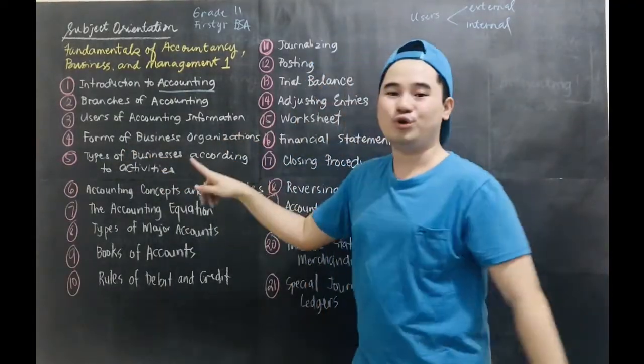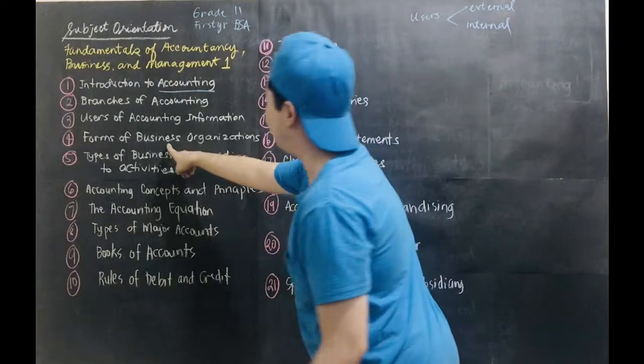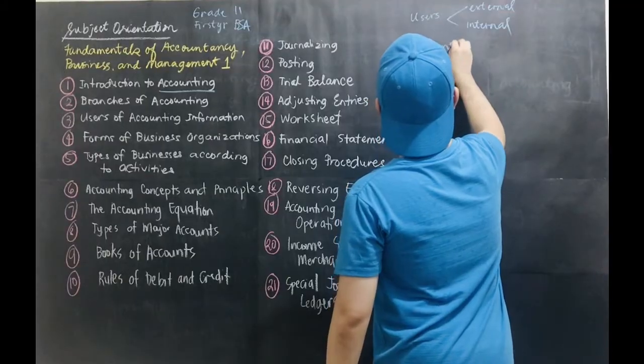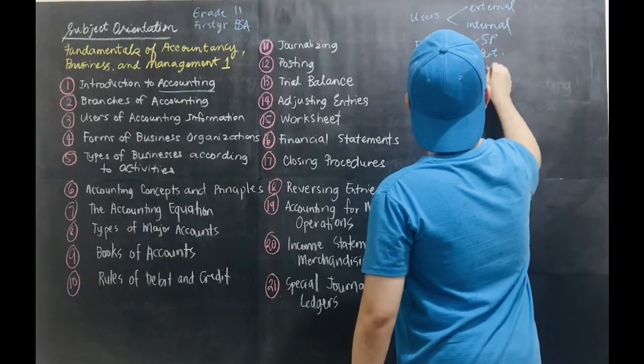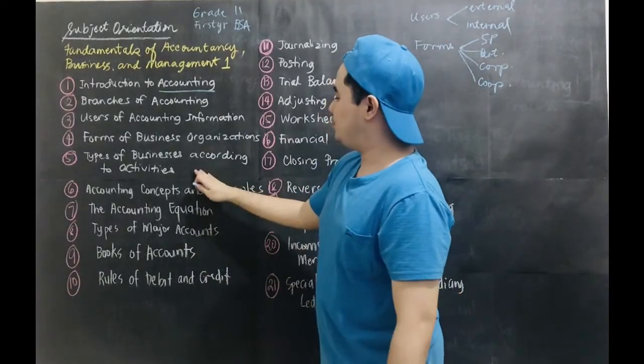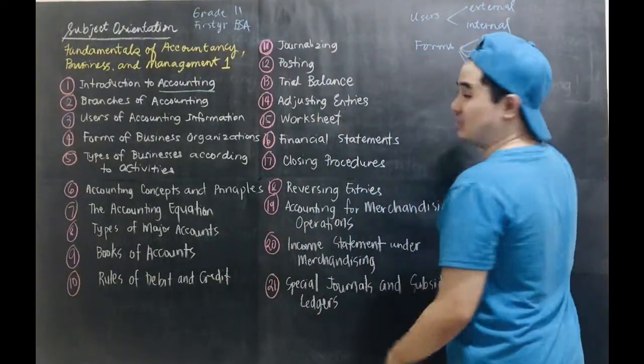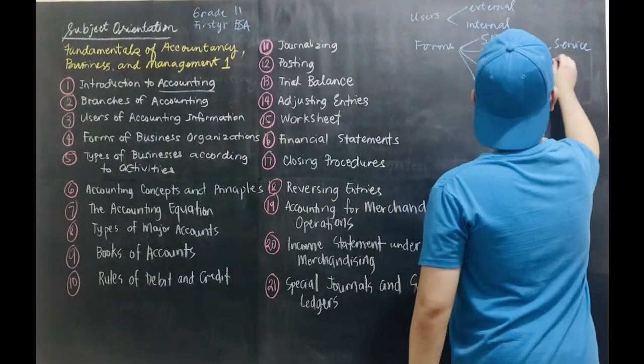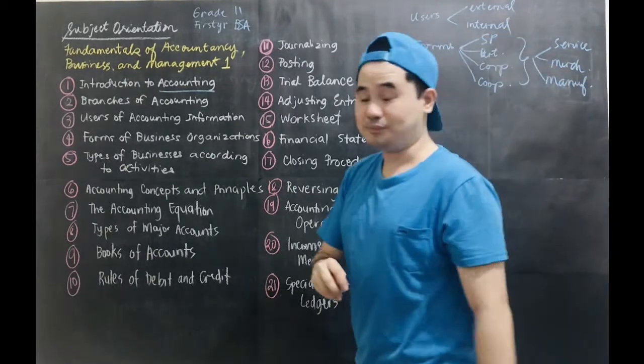And then we also have the different forms of business organization. Just to give you an overview, the four forms of business organization includes sole proprietorship, partnership, corporation, and cooperative. We will also be talking about the activities of these business organizations. So these business organizations can enter into a service type of business, merchandising, or manufacturing.